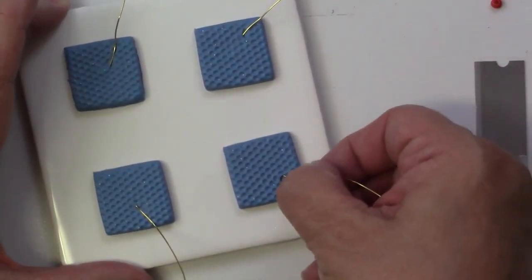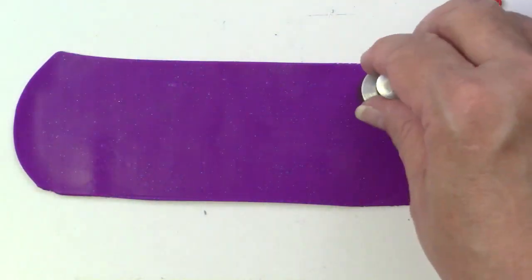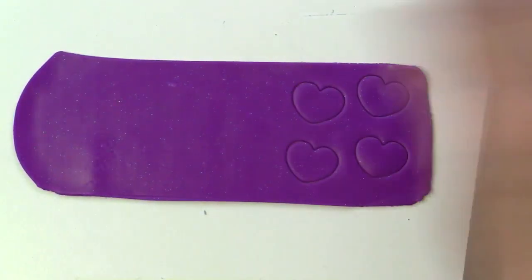Now one thing I would say is where you're placing it make sure that it is going to get covered up by the heart because that's going to give it some extra strength and keep that wire really well embedded.